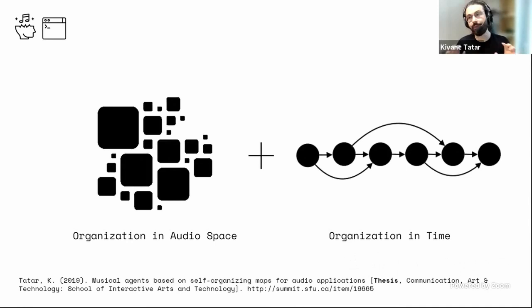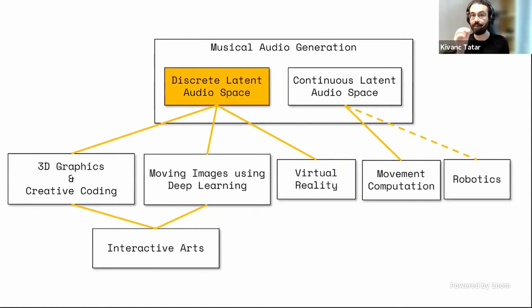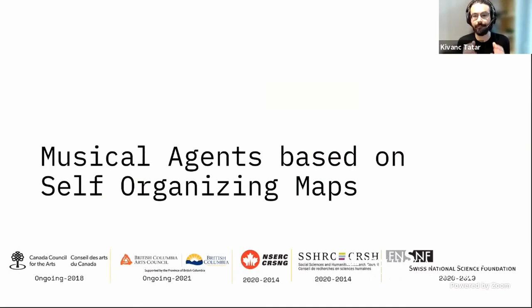These two types of organization became the main activities of my research. About seven or eight years ago, I delved into discrete latent audio space. In discrete latent audio space, each input data point is a sound sample — a couple of seconds, almost like an audio sample you'd use in Ableton Live or another DAW. I come up with an architecture called the Musical Agent-based Self-Organizing Map. The discrete latent space in this algorithm, called MASOM, is handled by a machine learning algorithm called self-organizing maps.